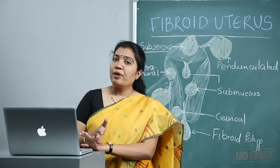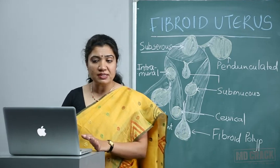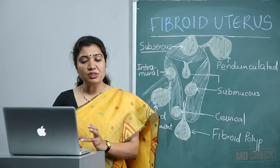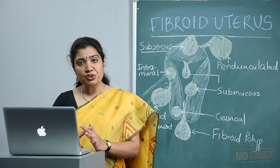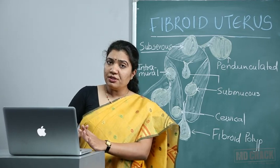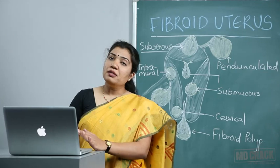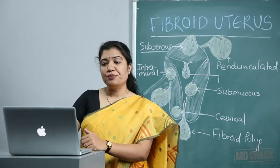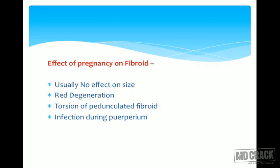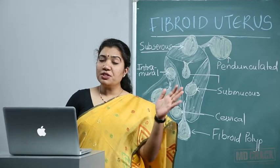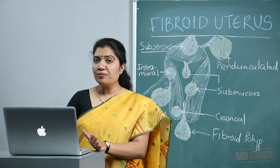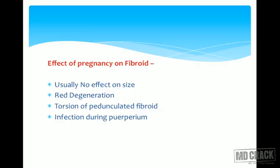To revise the effects of fibroid on pregnancy: infertility, abortions, abruption, uterine inertia, malpresentations or malpositions, obstructed labor, surgical difficulties, and in the third stage — PPH. In the puerperium there can be sub-involution. Effects of pregnancy on fibroid: usually no effect on size, but sometimes the tumor may grow and there will be red degeneration. There can also be torsion of a pedunculated fibroid, and infection in puerperium is very common, which may lead to puerperal sepsis.